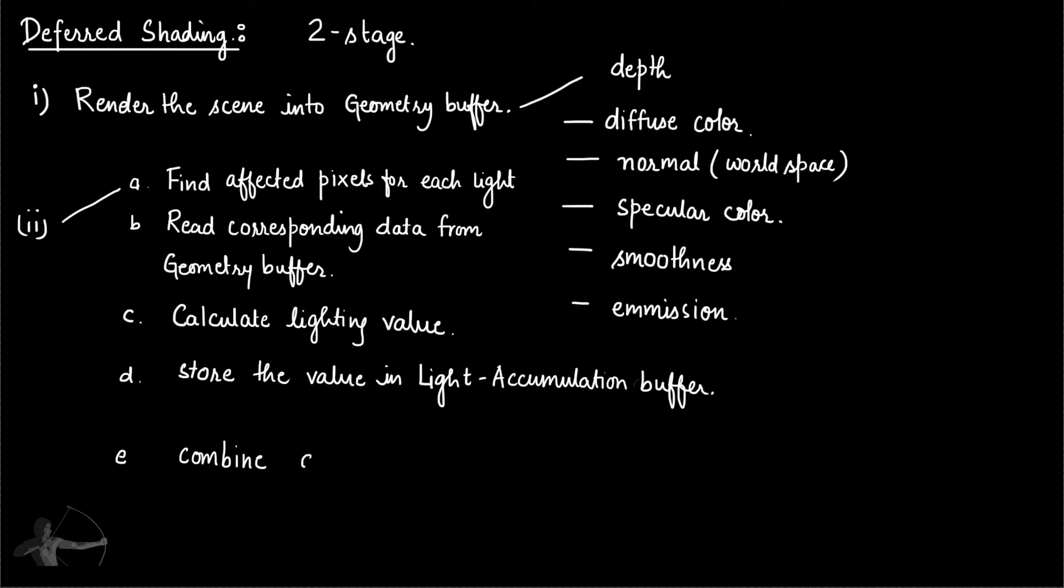Now combine the accumulated light values with the mesh color, which is the diffuse color, specular color, emissive color, and other values that we stored in the geometry buffer.